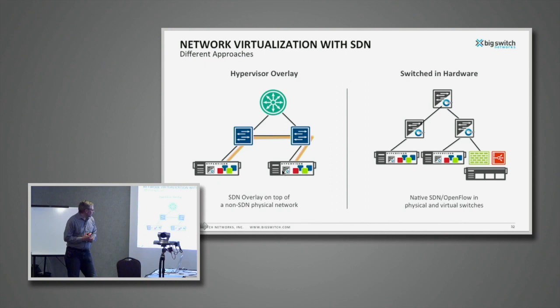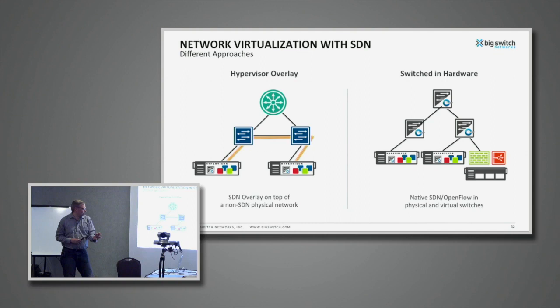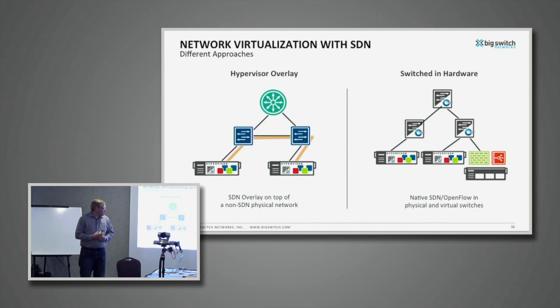The first approach — you might have heard a lot about this when VMworld happened recently — takes hypervisor switches and creates a full mesh of tunnels between them. All the logic happens in these hypervisor switches. The network behind that is a dumb network; you simply tunnel over it. You don't need to modify it, but all the logic is moved down into the hypervisor.